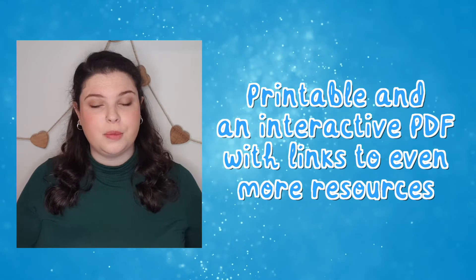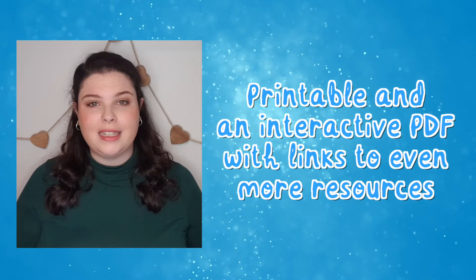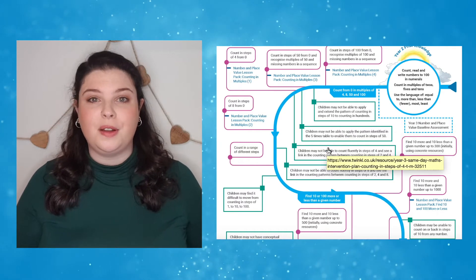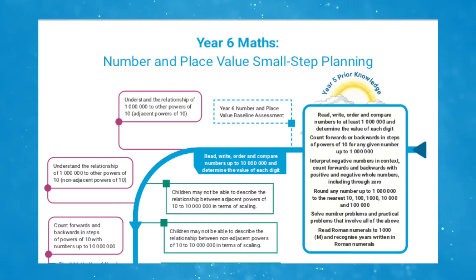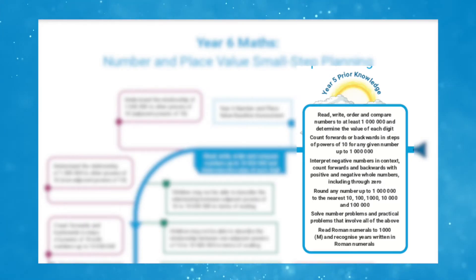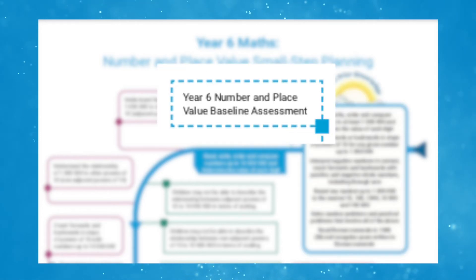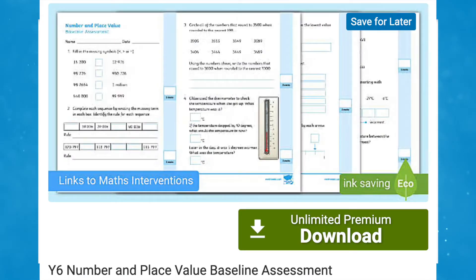Although these resources are printable, if you download them as a PDF they come with links back to the Twinkle website where you can download even more resources to support your learners. Each planning document begins with prior knowledge — this is what children should already know from the previous year's learning. You could even download the baseline assessment suggested here as a quick way to gain an impression of your children's current attainment in this particular maths area.